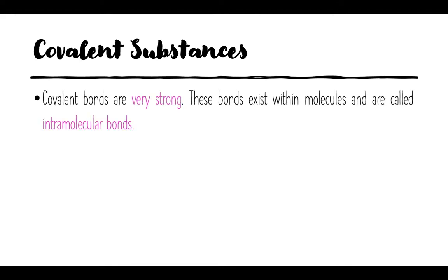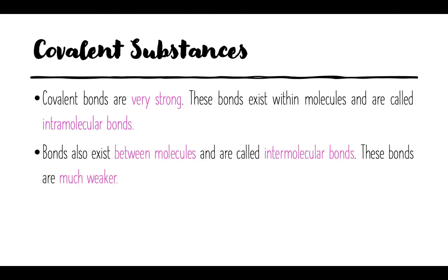Covalent bonds are incredibly strong bonds. They exist within the molecules, which means they are what hold that molecule together. So covalent bonds hold one oxygen to two hydrogens and create a water molecule — very strong bonds, very difficult to break. Now water doesn't just exist as one single water molecule. In a glass of water, you have millions of water molecules floating around, all held together very weakly by something called an intermolecular bond, which holds one molecule of water to another and exists between the molecules.